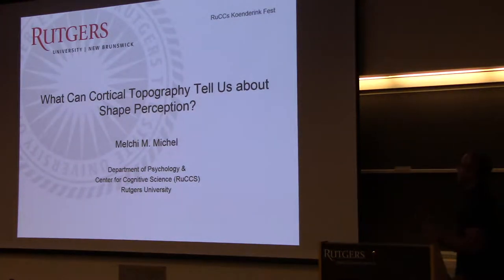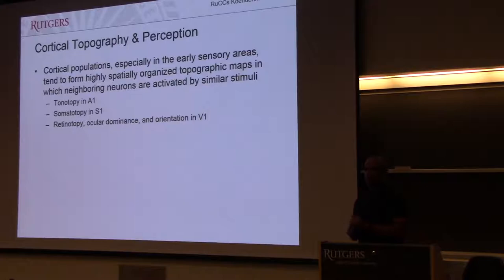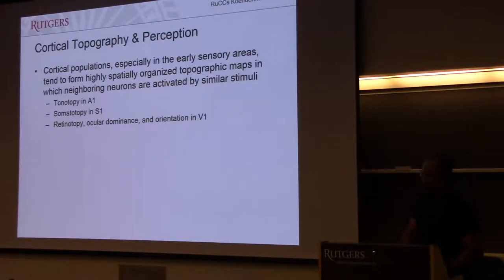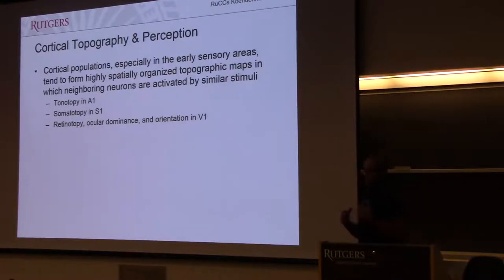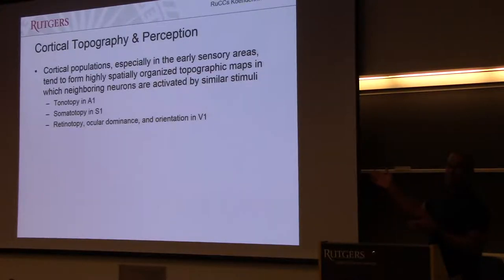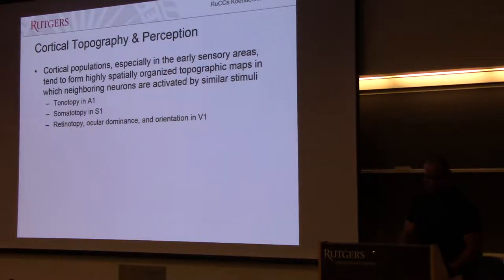The title of the talk is 'What Can Cortical Topography Tell Us About Shape Perception?' I'm really interested in the extent to which shape perception, at least coarse shape perception, is either influenced by or reflected in cortical topography. Topography is seen throughout the sensory systems — we have the homunculi in the primary somatosensory and motor cortices, tonotopy in primary auditory cortex, and in V1 you have retinotopy, ocular dominance columns, orientation, and even a topography of spatial frequency.